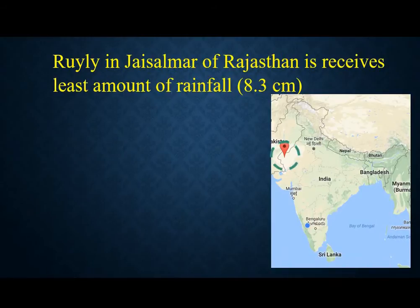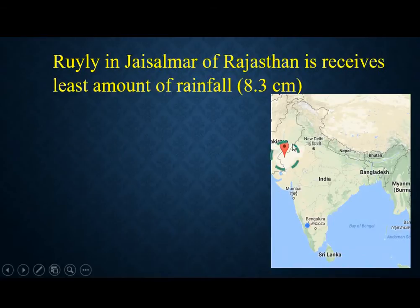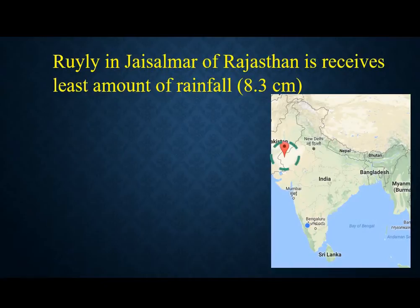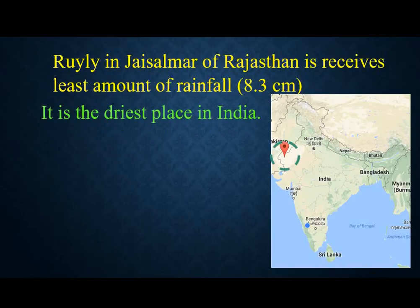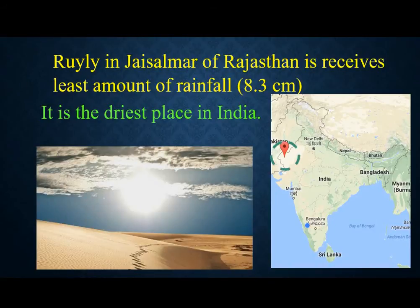The place with the lowest rainfall receiving area is Ruili in Jaisalmer, Rajasthan. Please remember this — it can also be asked in a map question about which is the lowest rainfall area in India. Ruili, in Jaisalmer of Rajasthan, receives the lowest amount of rainfall — just about 8.3 cm of rainfall for a whole year. It is the driest place in India.